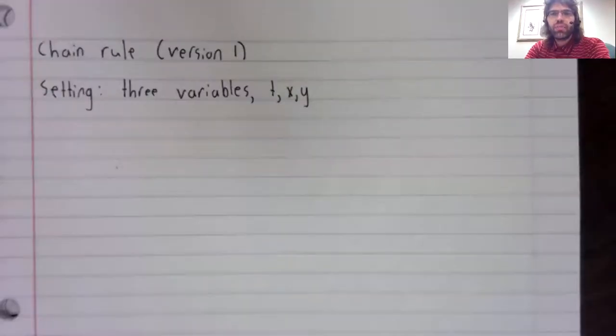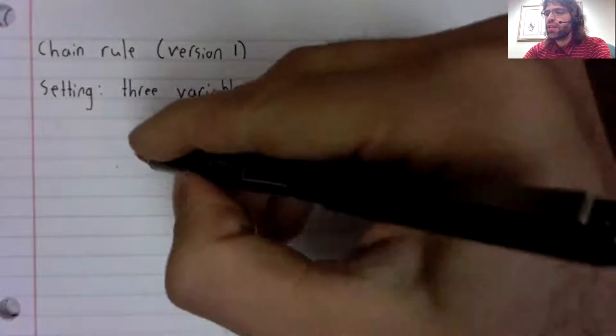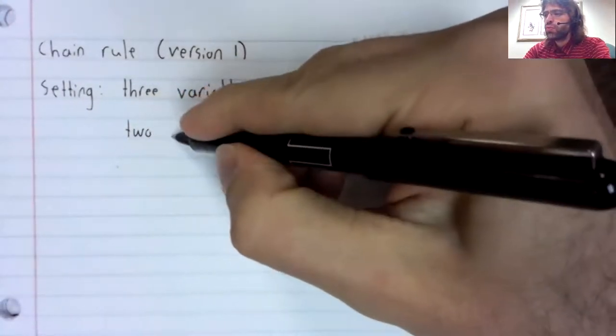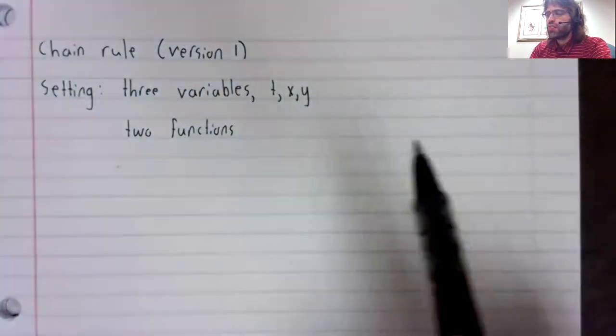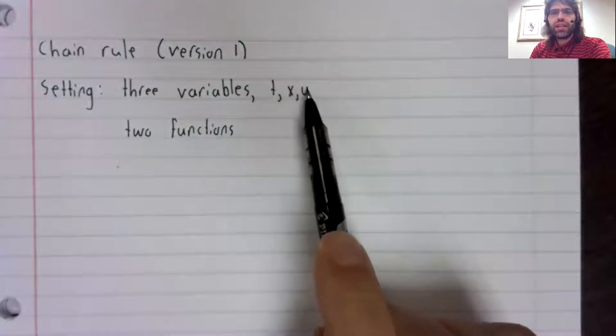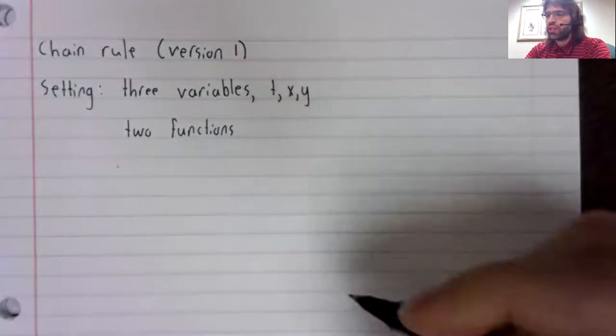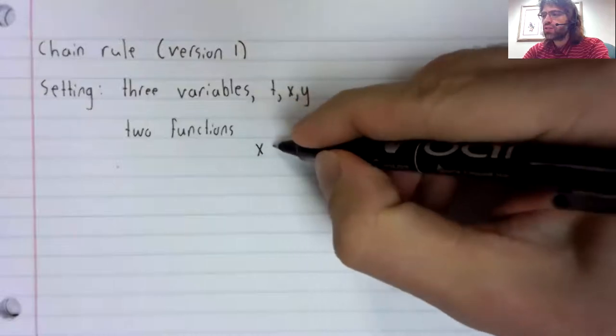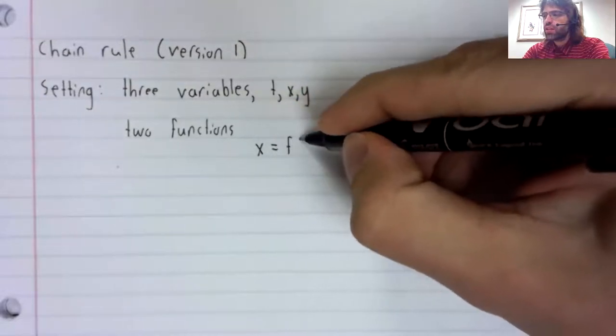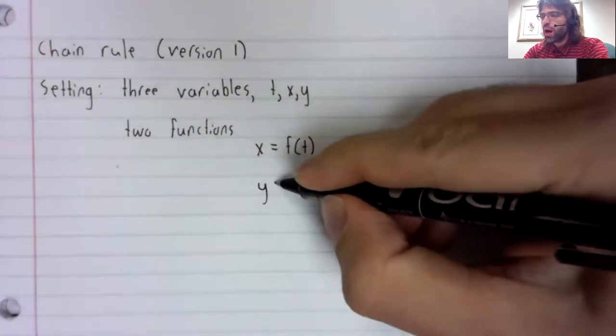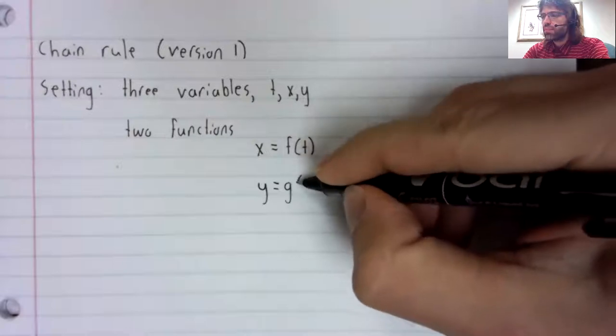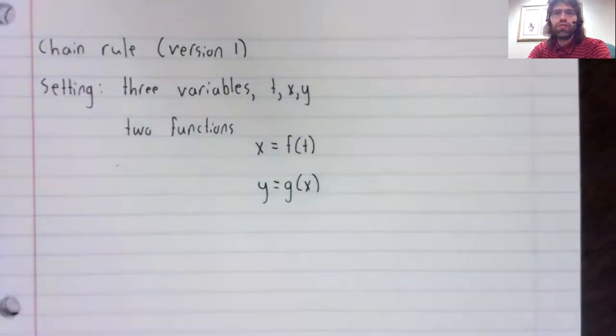The setting of this rule is that you have three variables: t, x, and y. And you have two functions. So these variables are related to each other by functions. X is a function of t, and y is a function of x.